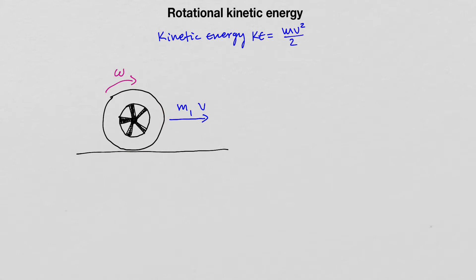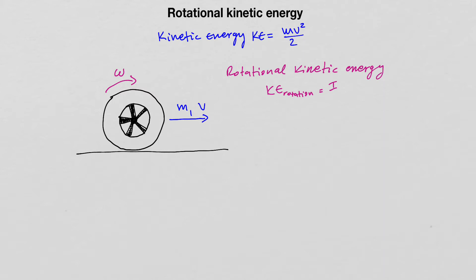So what kind of energy is that? This is known as rotational kinetic energy. Kinetic energy of rotation is defined as the product of the moment of inertia of the rotating body times the angular velocity squared divided by 2.